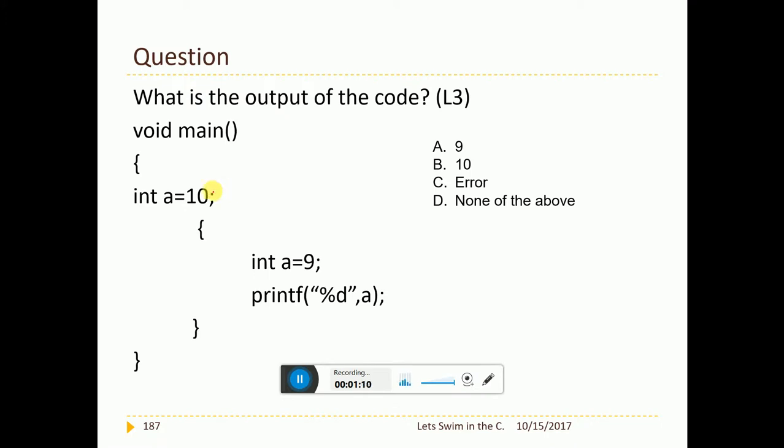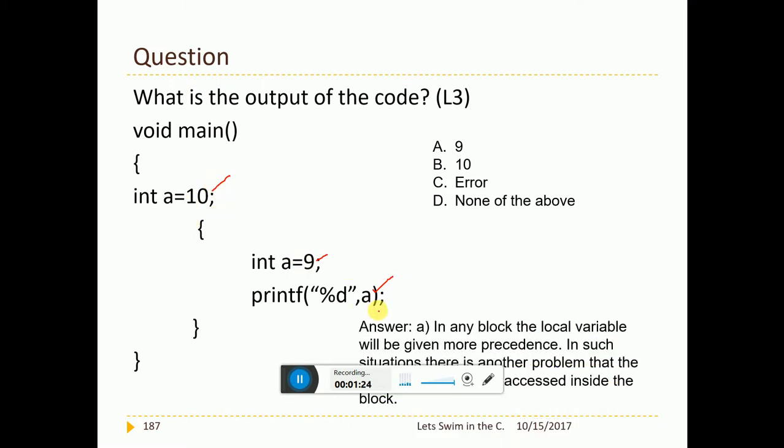Now, see it here. Int a equal to 10. I have a curly brace open, close. Int a equal to 9. Print of a. Now, what will be printed? Now, the scope is here. It is very much restricted. So, I have a here. A is with 9 and this will not be visible here. So, a is 9. Answer should be a.